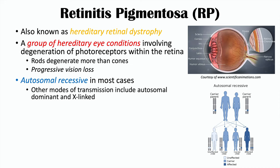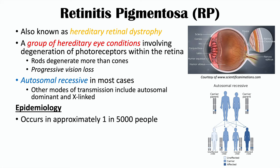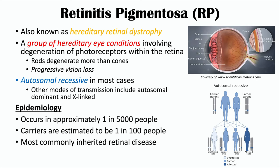There are other modes of transmission, including autosomal dominant, which only requires one affected allele, and X-linked, which is more likely to occur in male patients as they only have one X chromosome. Retinitis pigmentosa is estimated to occur in approximately one in 5,000 people, and carriers for affected alleles is estimated to be one in 100 people. It is actually the most commonly inherited retinal disease. The onset of signs and symptoms occurs in different age groups: autosomal recessive cases tend to present in teenage years, while autosomal dominant cases more often present in the patient's 20s.